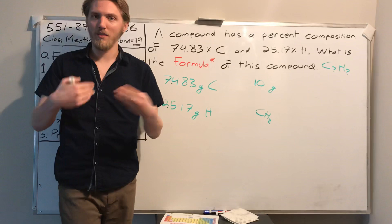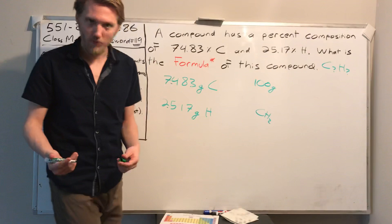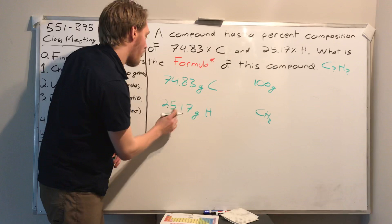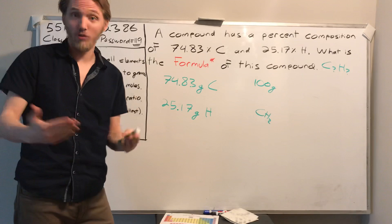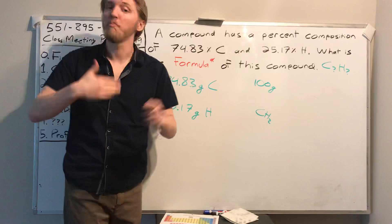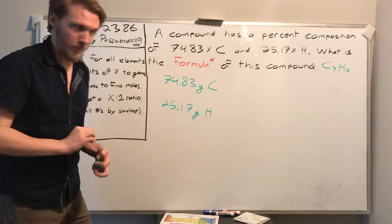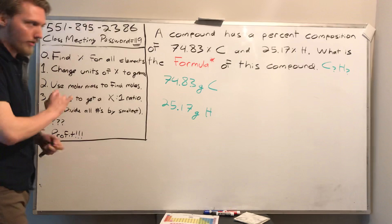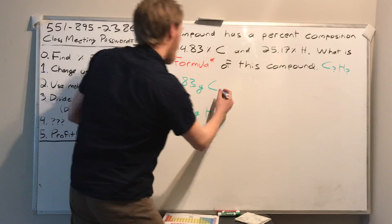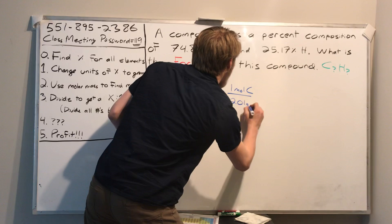So step one is really just helping us get towards solving this. We assume 100 grams, and the percentages represent the masses: 74.83 grams and 25.17 grams. The reason we get to grams is so we can do step two: use molar mass to find moles. Carbon's molar mass is 12.01 g/mol, and hydrogen's molar mass is 1.01 g/mol.